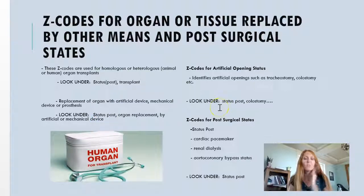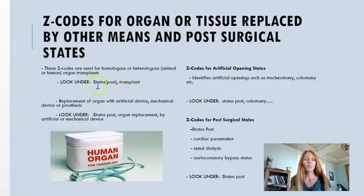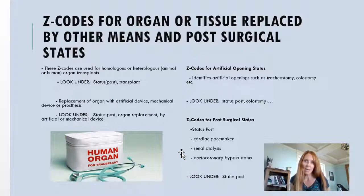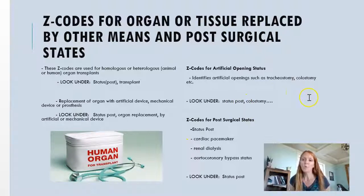We also have Z codes for organ and tissue replacements and post-surgical status. Anytime something has already happened to the patient, you use status post. Like if they had an organ transplant or a heart valve replacement, you go to status post. So if they had a pacemaker, a prior heart bypass — CABG, coronary artery bypass graft — or any kind of artificial opening like a colostomy or tracheostomy, all of that's under status post because it's already done.